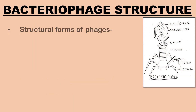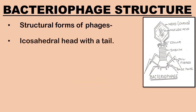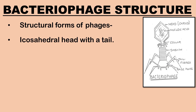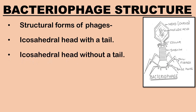There are three basic structural forms of phages: an icosahedral 20-sided head with a tail, an icosahedral head without a tail, and a filamentous form.